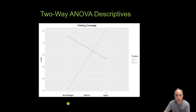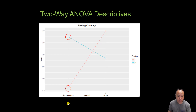Going back to the plot lines and looking at scrimmages alone, there is a significant difference in fielding coverage between the two groups, and we can conclude that position players perform better when using scrimmages.